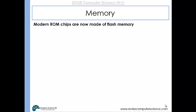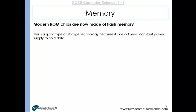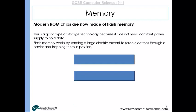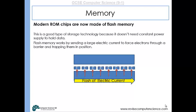Modern ROM chips are actually made of flash memory, which is non-volatile — it doesn't need power to hold the data — and is very quick at delivering data. Flash memory works by having a couple of materials through which an electrical current is flashed, forcing electrons and trapping them between these materials. The different arrangement of electrons gives us our data.